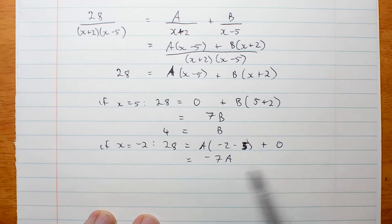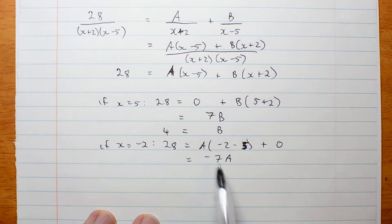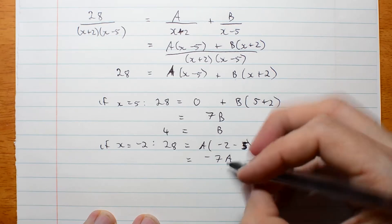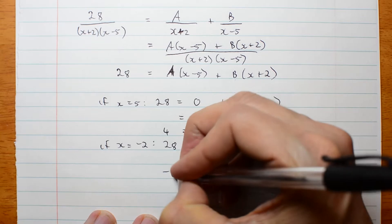Again, when you get better at this, you can skip this step and go straight to negative 7 times a. But if that's true, then a must be negative 4.